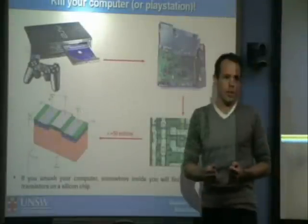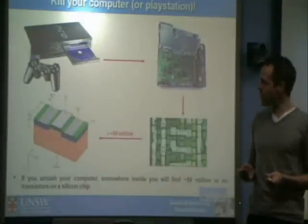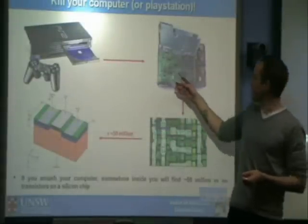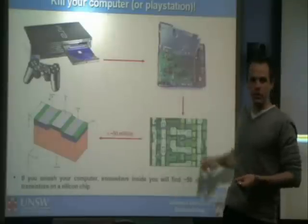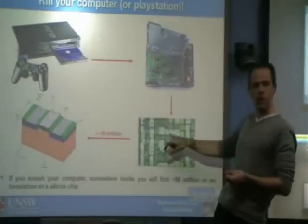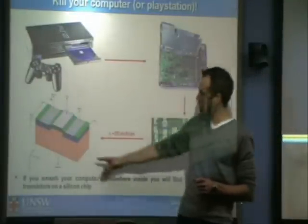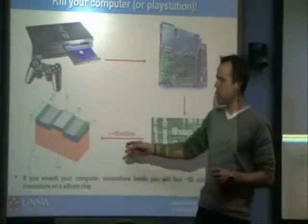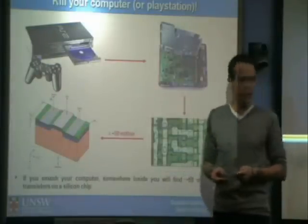If you take your PlayStation — you've probably all got PlayStation 3 now, so you can take your PlayStation 2 and destroy it — and if you pop open the lid, you'll see on the inside there's a whole pile of circuits. If you could break into those circuits and have a look with a microscope, you'll find millions and millions of little devices. If you look closely at those devices, you'll find something called a transistor, and there are around 50 million of these inside your average computer chip these days.